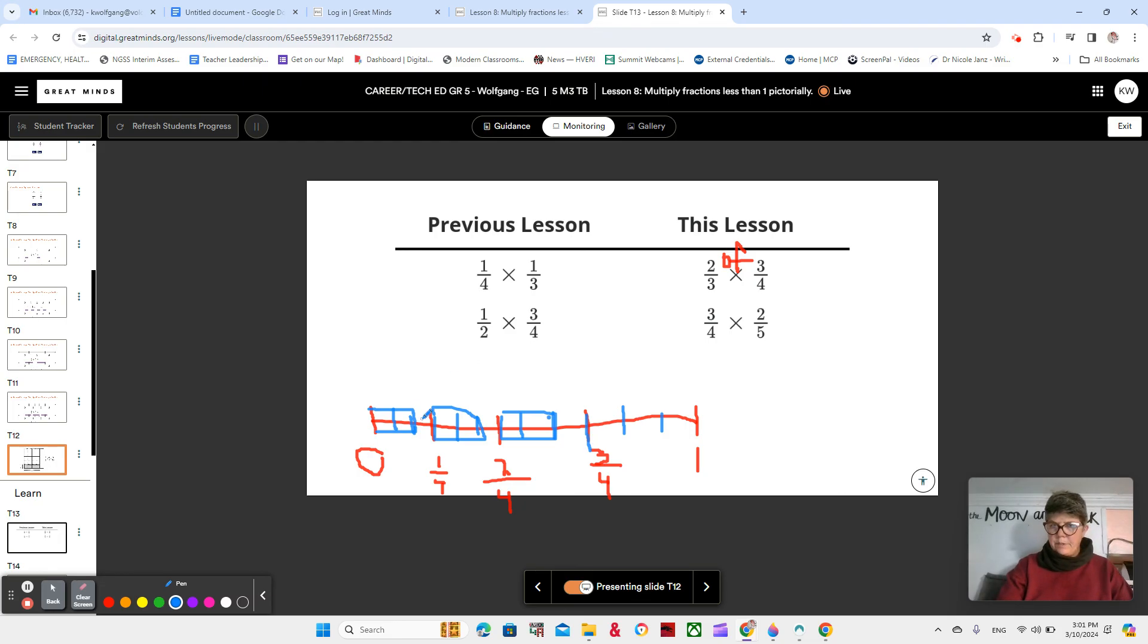1, 2, 3, 4, 5, 6. How many total parts? 3, 6, 9, 12. Right? And if we multiply it right across, 2 times 3 is 6. And 3 times 4 is 12.